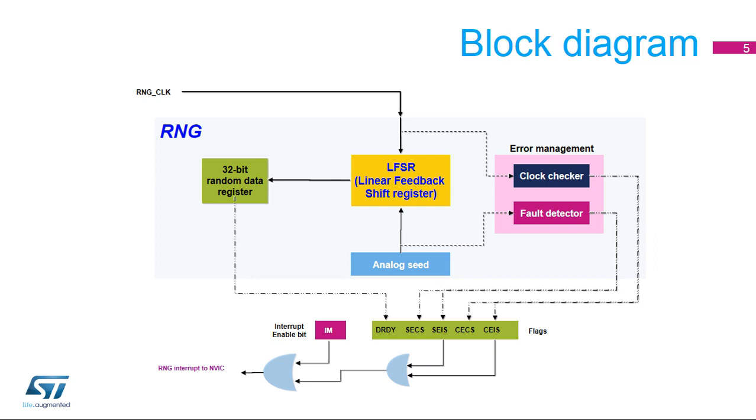The contents of the linear feedback shift register are transferred into the data register when a significant number of seeds have been introduced into the LFSR. In parallel, an error management block verifies the correct seed behavior and the frequency of the RNG source clock if a PLL48 source is used.